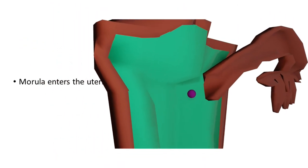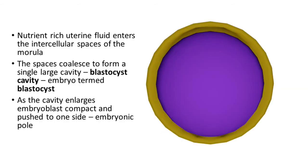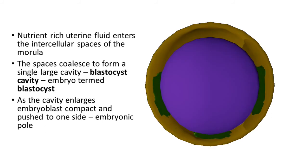It is at about this stage, that is the stage of morula, that the embryo reaches the uterine cavity. Now what is there in the uterine cavity? The nutrient-rich uterine fluid which is secreted by the uterine endometrium. This nutrient-rich uterine fluid now enters the intercellular spaces of morula.